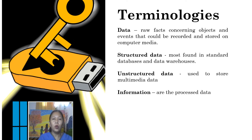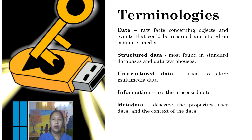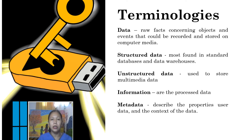And then we have information, which are the processed data. Next is metadata. If we say metadata, this is used to describe the properties or characteristics of the end-user data and the context of data, meaning it is the descriptions about data — the metadata.